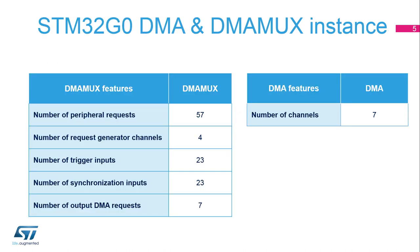The DMA-MUX instantiated in the STM32-G0 has the following features: 57 peripheral requests mapped to 7 DMA channels, 4 request generator channels, 23 trigger inputs, and 23 synchronization inputs.